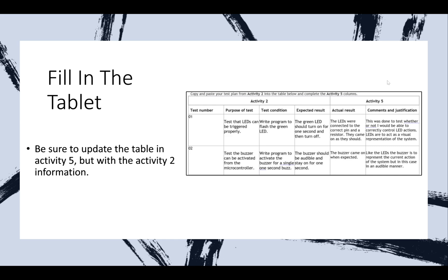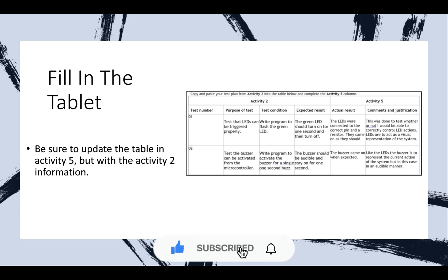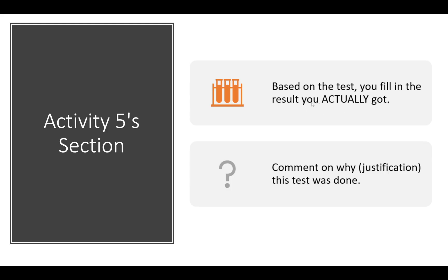Be sure to update the table in Activity 5 with the Activity 2 information. The Activity 2 information is the test plan — what you intend to test, what you plan to test. In Activity 2 you don't actually do the test; you sit down and think about what you should test. In Activity 5 you actually do the tests and give the results. You fill in the results you actually got, comment on why each test was done — that's the justification — and finally you analyze the test results.